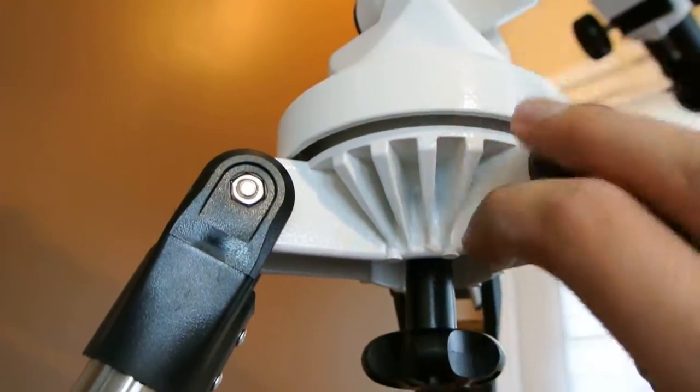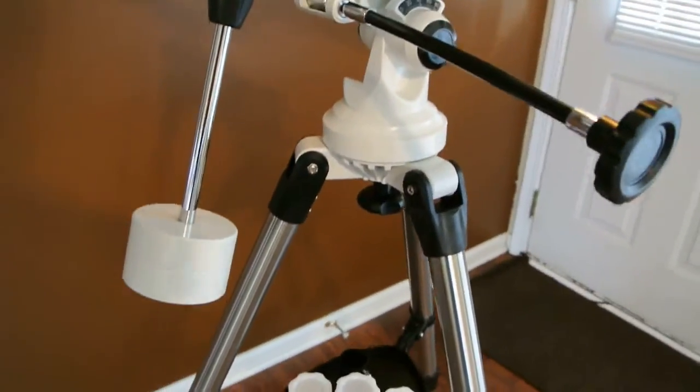The bottom housing of the tripod is all metal and we have some knobs here to adjust the tilts.